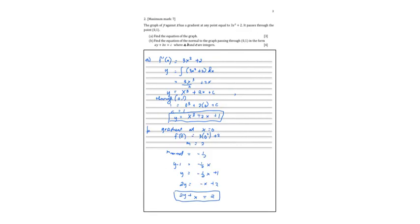For problem number 2, there is a graph y. The graph y against x has a gradient at any point equal to 3x squared plus 2. It passes through the point (0,1). Find the equation of the graph. So the given is a gradient in this form. So it says that this is the first derivative of x, the gradient, the slope. So the given is not really y, but f prime x or the derivative of the function is equal to 3x squared plus 2. So to get y, I have to do the reverse. Get the integral of the function 3x squared plus 2 dx and get this.